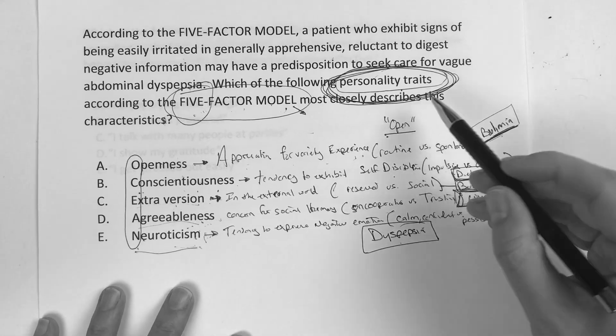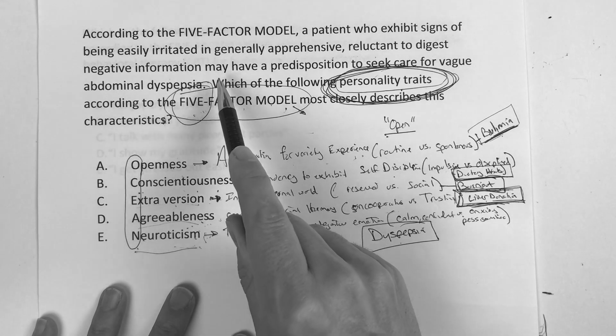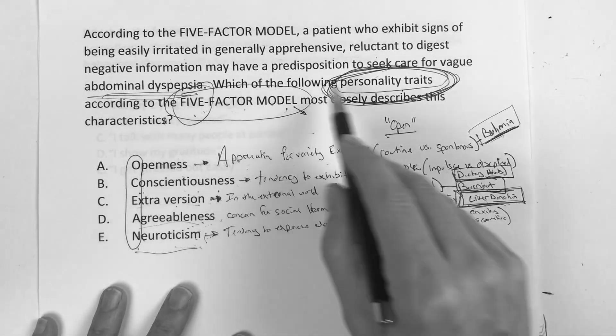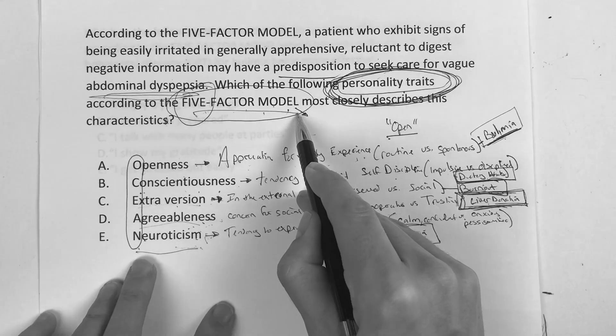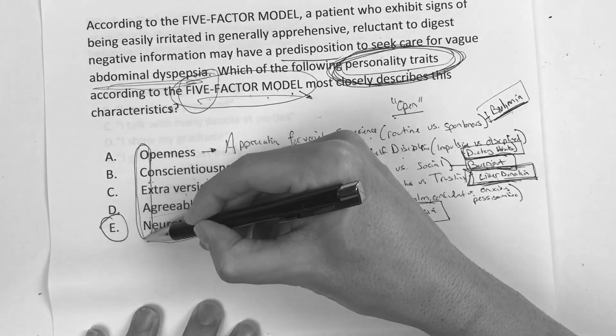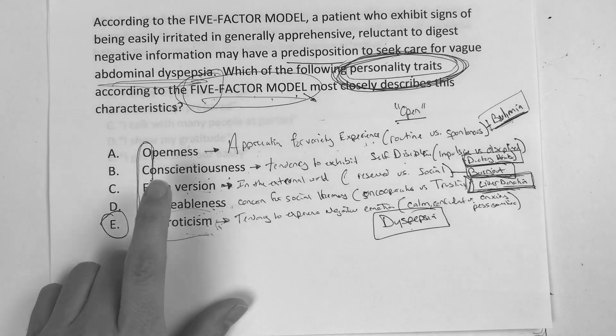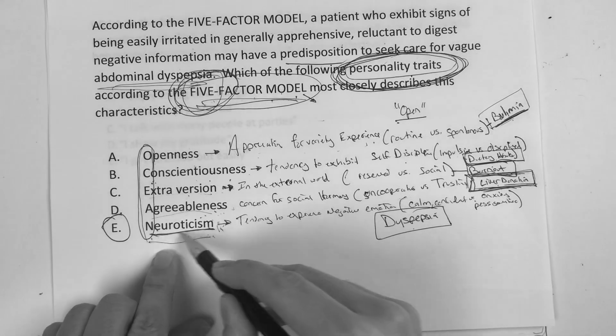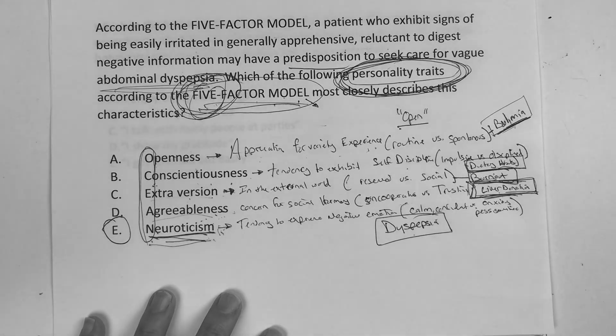Back to this question. I know we're deep into this. This person exhibits signs of being easily irritated and generally apprehensive, reluctant to digest negative information, may have a predisposition to seek care for vague abdominal symptoms. So they're always going to go to the doctor, per se. And so which of the following personality traits of the five-factor model are you going to choose? And in this situation, the correct answer is going to be neuroticism. And why I'm saying you've got to, you say, oh, I would have gotten neuroticism because it's the only one that makes sense. Yes. But what if they would have put just anxiety up here or something generic like that? Well that's not part of the five-factor model. The five-factor model says you better choose neuroticism, even though the definition is very close between those. That's what I'm saying. I want you to know that.